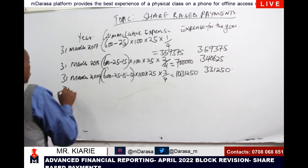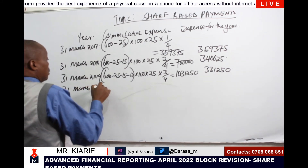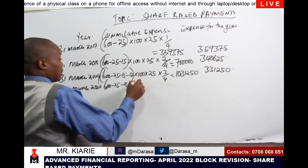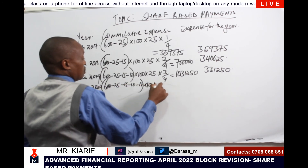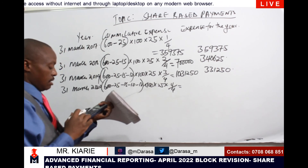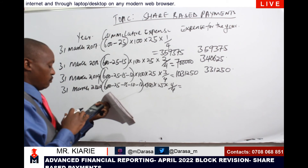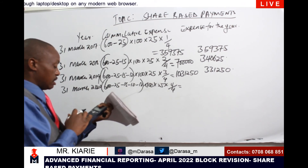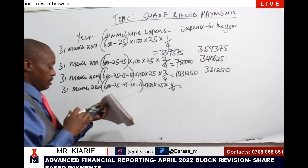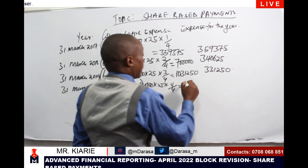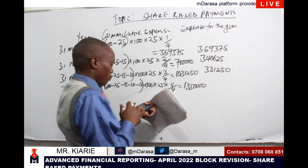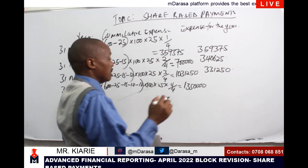For the year ending 31st March 2020, the calculation is: 600 minus 25 minus 15 minus 10 minus 10, times 100, times 25, times 4 over 4. This gives a cumulative expense of 1,350,000. Subtracting 1,031,250 gives an expense for the year of 318,750.